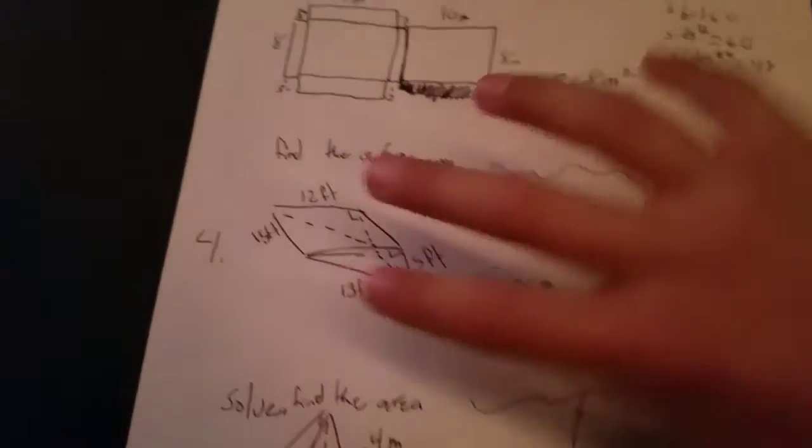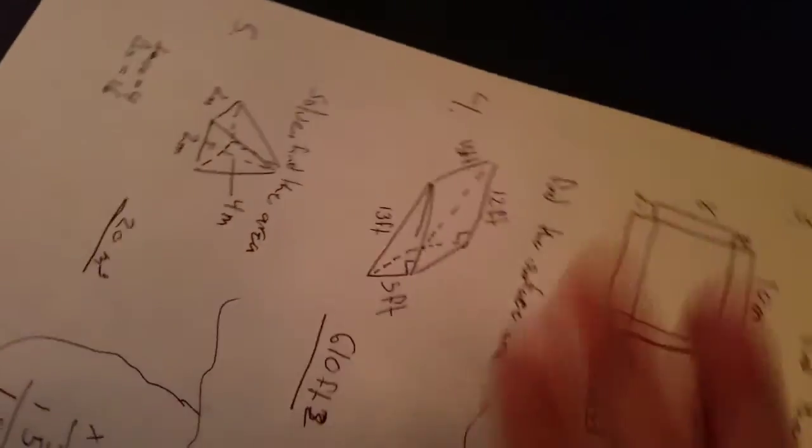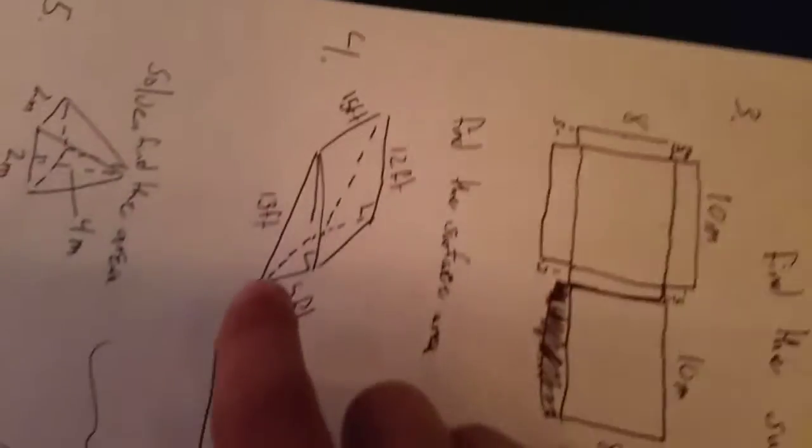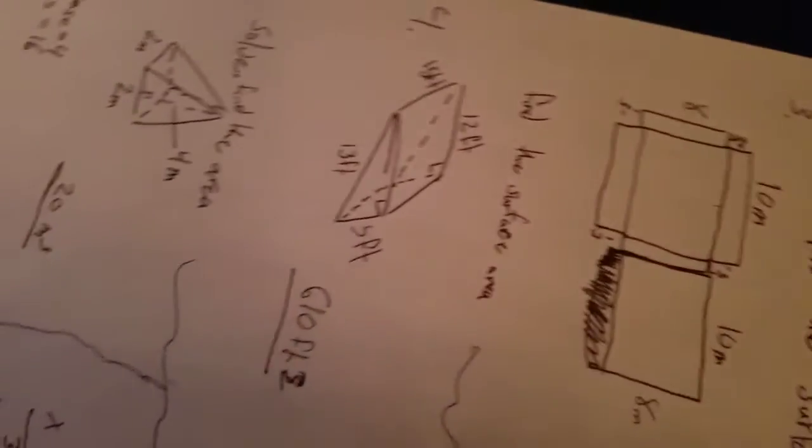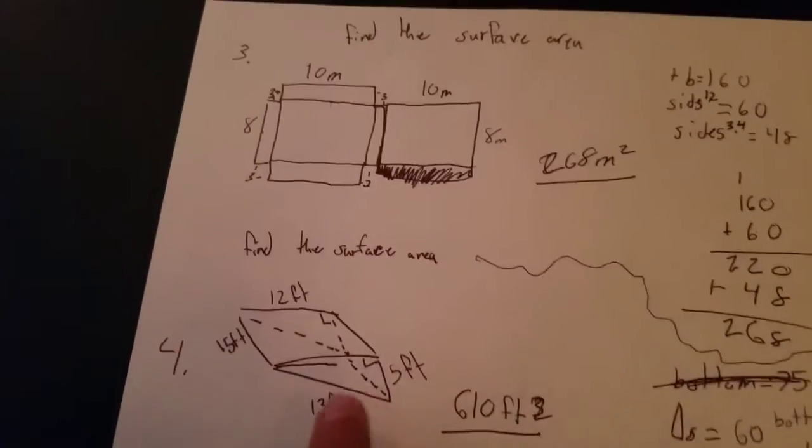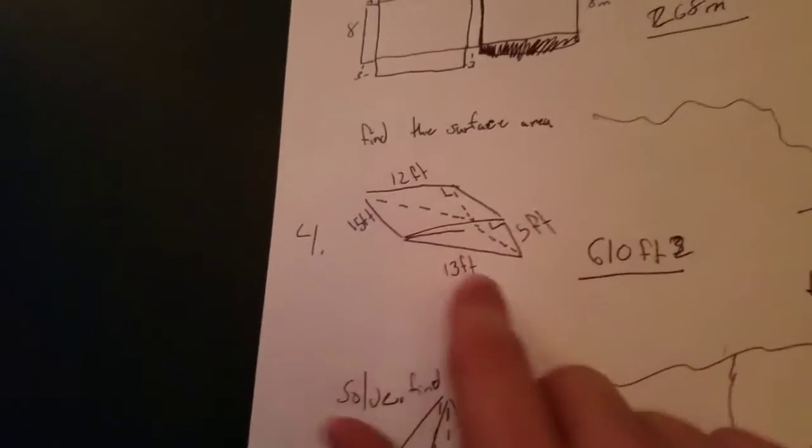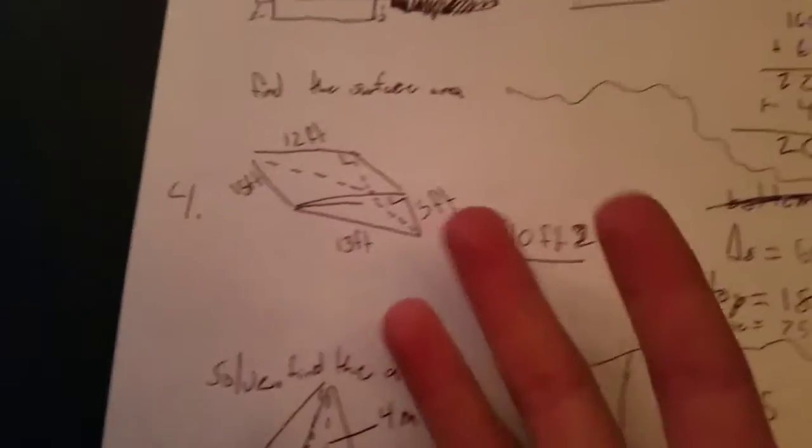So since you have the right angle right here, that means that it is supposed to be this way. It is a right triangle. And so we can go 5 times 12 which is 60. So the triangles equals 60. And since you normally divide it by 2 which would give you 30, you have two triangles, right? So you get 60.